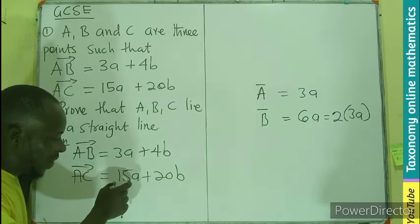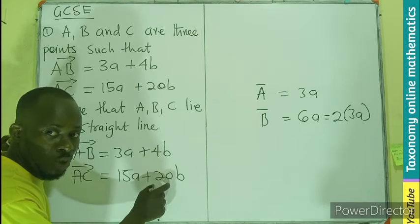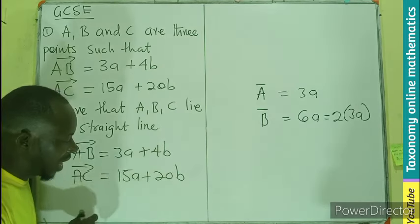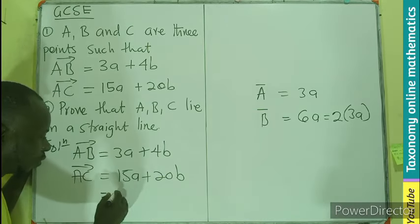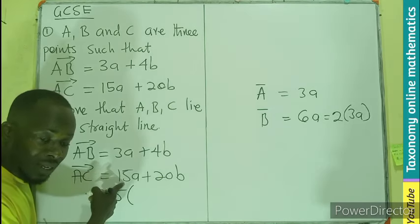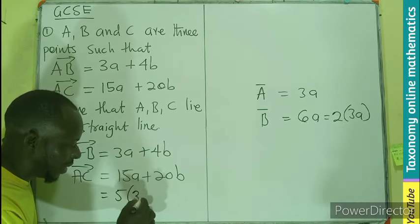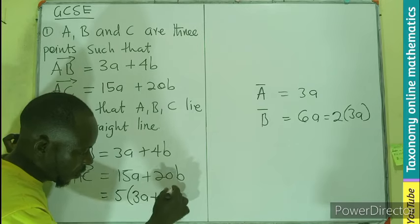So, I can see that if I find a common factor between 15 and 20, that common factor is going to be 5, right? So, vector AC can also be 5 into bracket. 15 divided by 5, that would be 3a. 20b divided by 5 will be 4b.